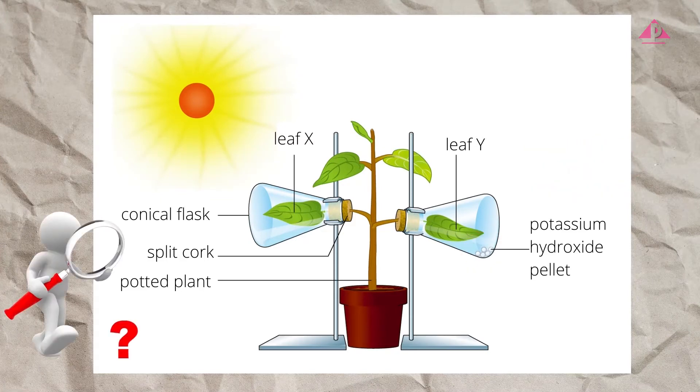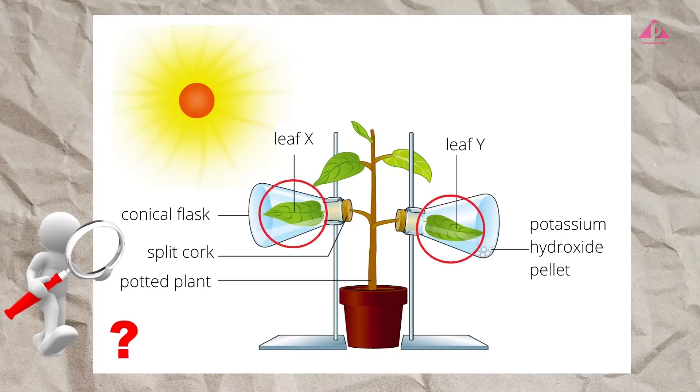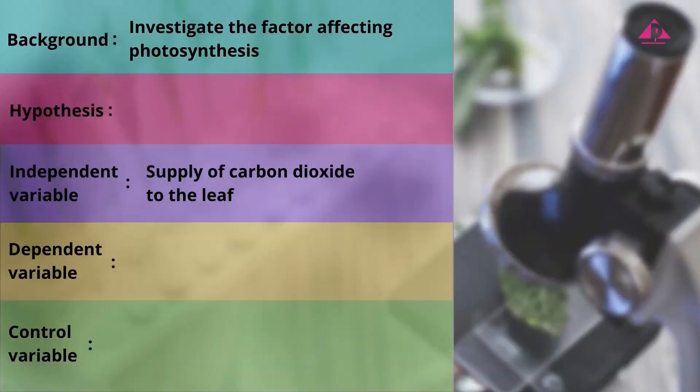You might be confused about using two different leaves in the setup. Why doesn't this count as an independent variable as well? Since we have presumed both leaves carry out photosynthesis, we won't take this as an independent variable. We have now found the independent variable of this experiment.